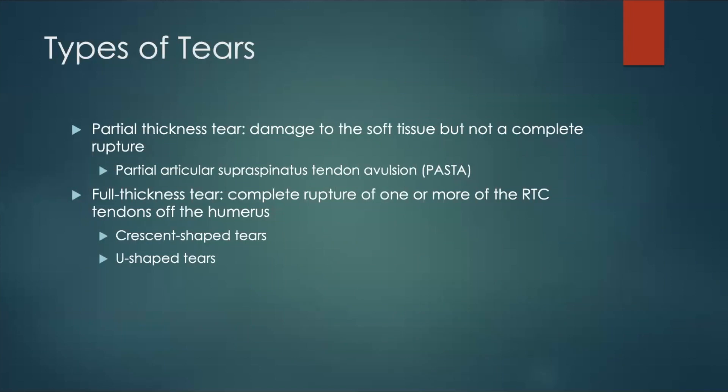Rotator cuff tears can primarily be classified into two types. A partial thickness tear is damage to the soft tissue but not a complete rupture of the tendon, while a full thickness tear is a complete rupture of one or more of the rotator cuff tendons away from the humerus. The partial articular supraspinatus tendon avulsion, also shortened to PASTA, is the most common type of partial tear associated with traumatic injuries. The crescent and U-shaped tears describe common types of full thickness tears by describing how the tendon pulls away from the bone, and also implies how the repair was performed.